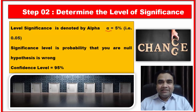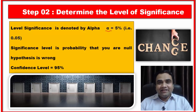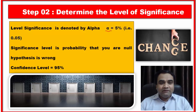The significance level is the probability of rejecting your null hypothesis. The confidence level is exactly opposite to the significance level. If my significance level is 5 percent, then my confidence level is 95 percent. If my significance level is 1 percent, then my confidence level is 99 percent. The formula is: confidence level equals 100 minus the significance level.